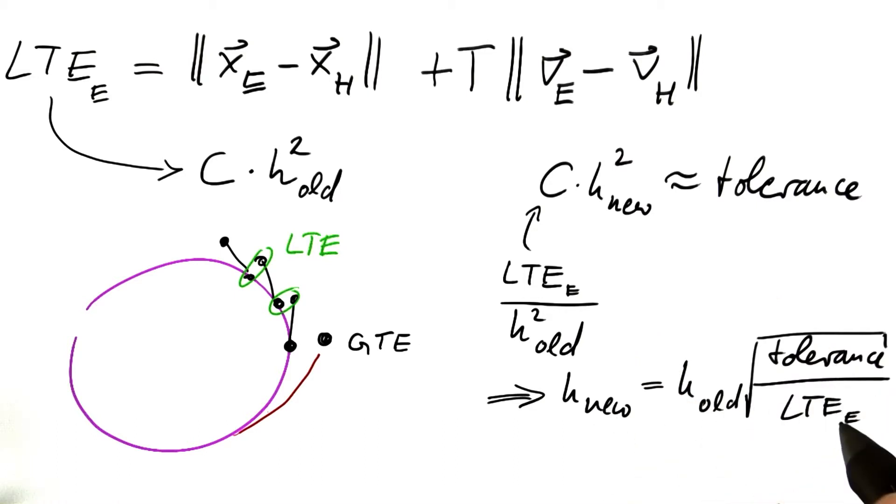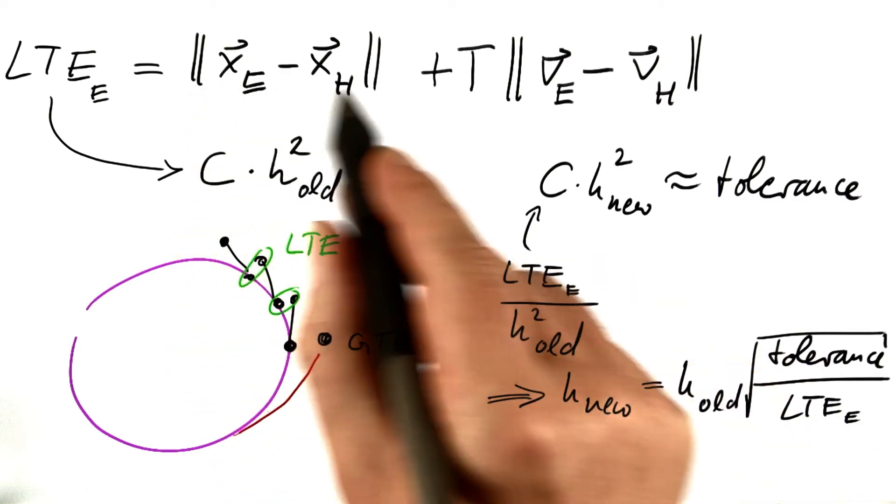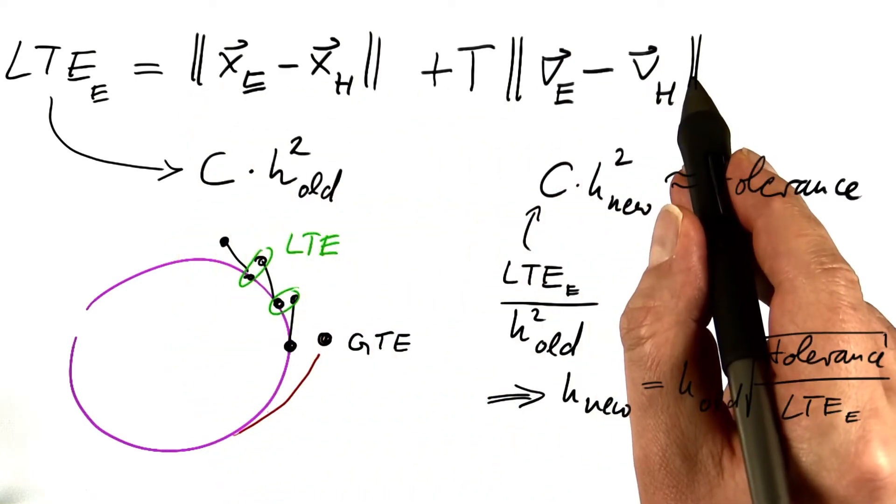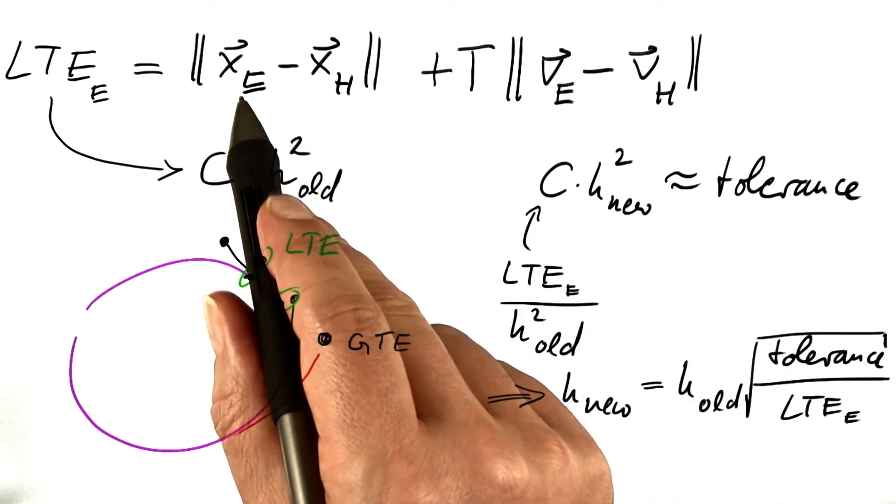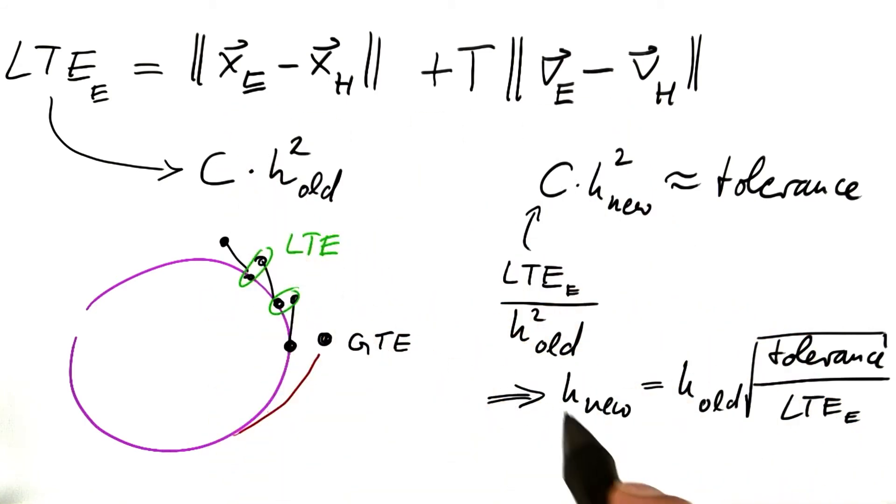So after we did the first step with that old step size, we got an estimate for a perfect step size that would produce a local truncation error of size tolerance for Euler's method.